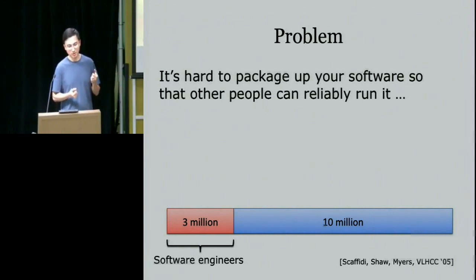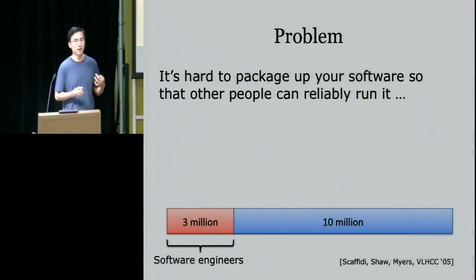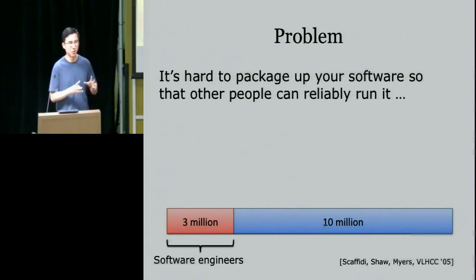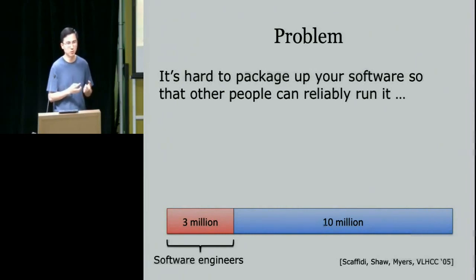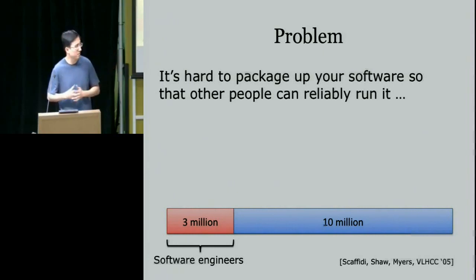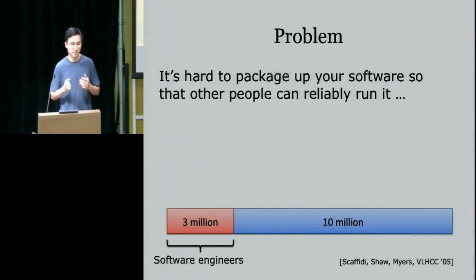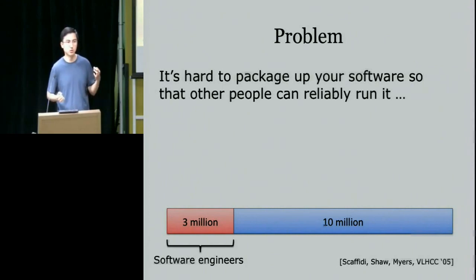A fundamental reason this is a problem is that you can only test on your own machine — you can't really predict all the quirks, different OS versions, libraries, and what's on other people's machines. Any make files, build scripts, or installation instructions you write will be inherently overfit for your own machine. A recent study of labor statistics showed that there are about 13 million people who do programming at work beyond just creating spreadsheet macros or database queries.